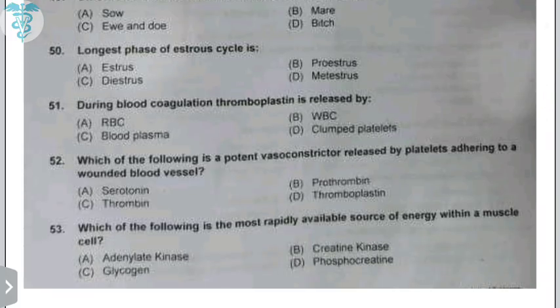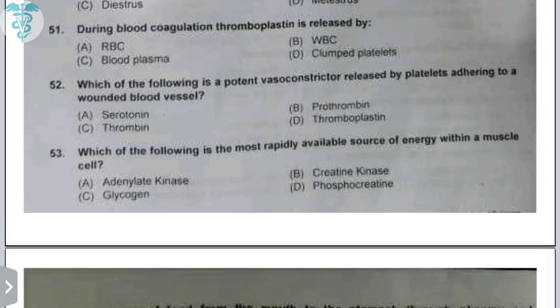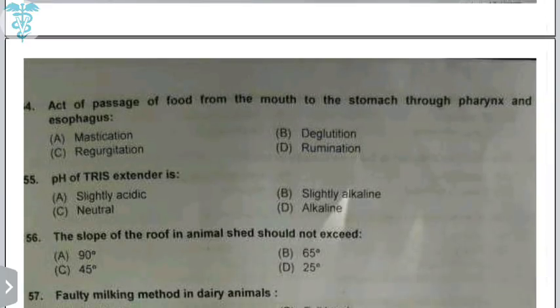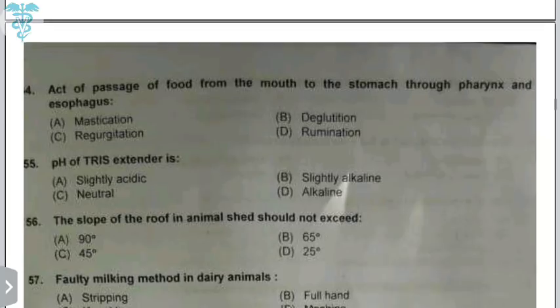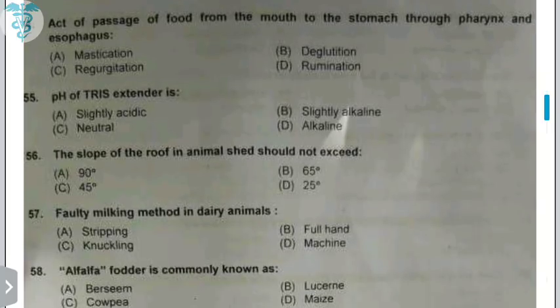The potent vasoconstrictor released by platelets adhering to the wounded blood vessel is serotonin. The most readily available source of energy within a muscle cell is phosphocreatine, and creatine kinase enzyme is required for its utilization. The act of passage of food from the mouth to the stomach through the pharynx and esophagus is known as deglutition.